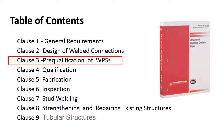Here's our table of contents for AWS D1.1. We're going to get into Clause 3, which is pre-qualification of WPSs — pretty much the meat of this welding code. Clauses 3, 4, 5, and 6 are the heavy bulk of the code, and Clause 9 on tubular structures is pretty important too. Clauses 1, 2, 7, and 8 aren't the meat of the code to me — they're a garnish.